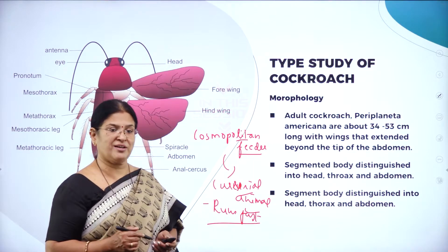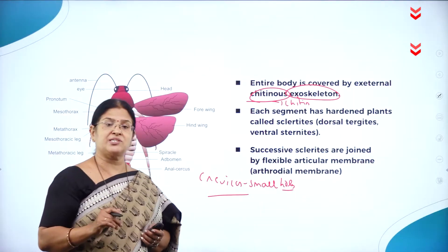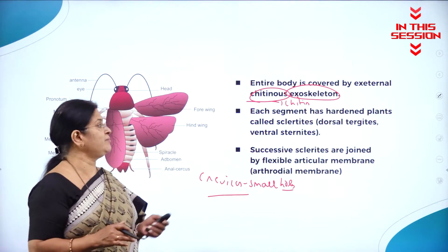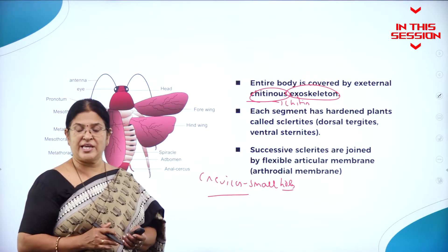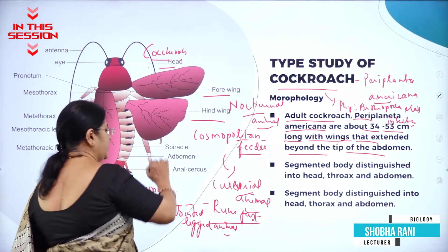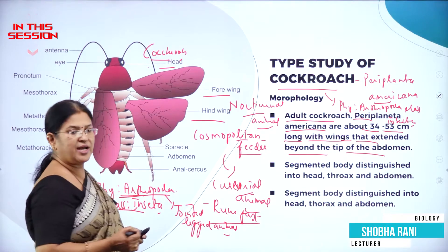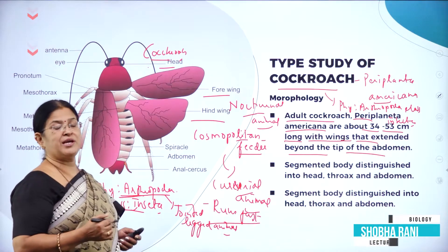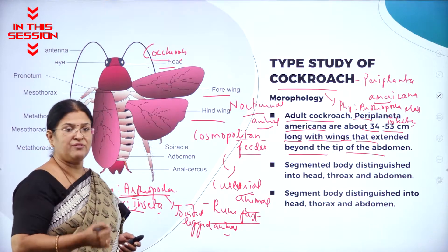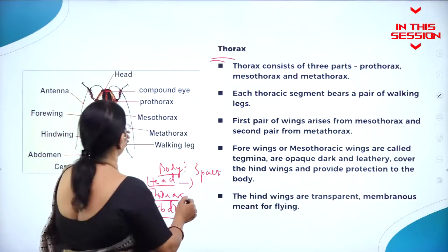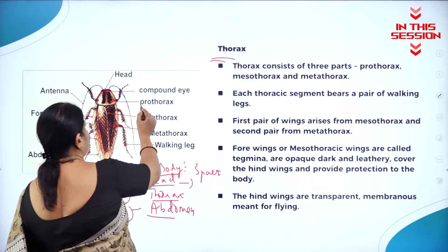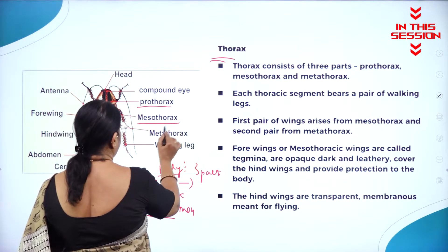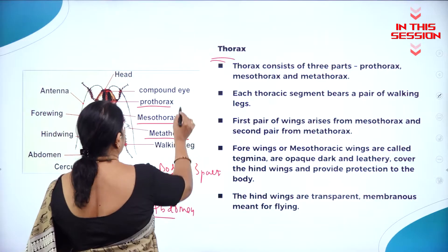This animal is a nocturnal animal. The skeletal structures found outside the body of the animal are called a chitinous exoskeleton. Antenna are very important — the animal is able to sense the environment with them. Here you can see the thorax consists of three parts: prothorax, mesothorax, and metathorax.